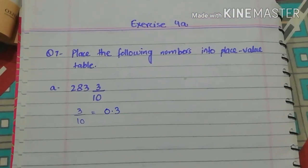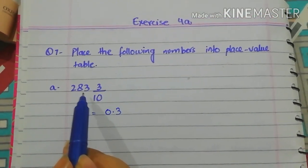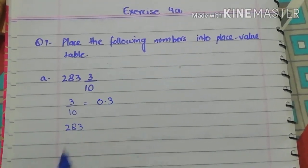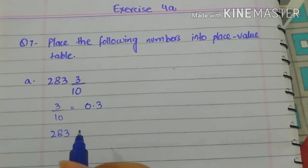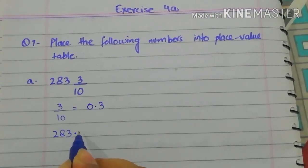This means, in mixed fraction we do not change this whole number. 283 is a whole number so we do not change 283. Now, we combine these two values. 283.3